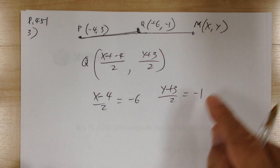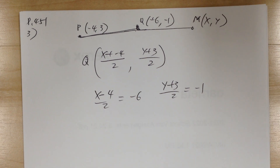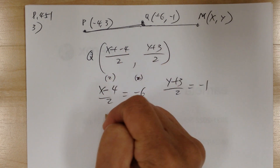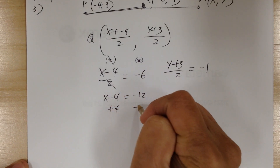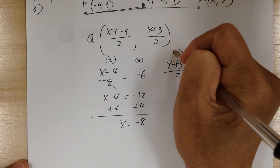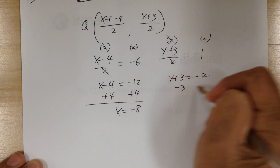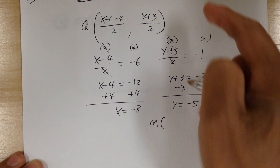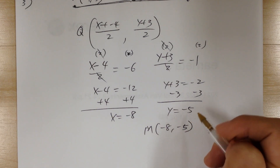Working by group using the same midpoint formula: multiply by 2 on both sides. You get x minus 4 equals negative 12, then plus 4, so x equals negative 8. For y, multiply by 2: y plus 3 equals negative 2, minus 3 on each side, so y equals negative 5. So M is negative 8, negative 5 — answer C.